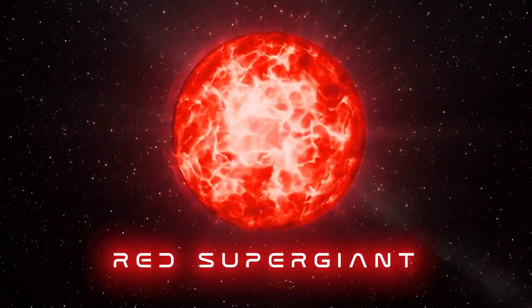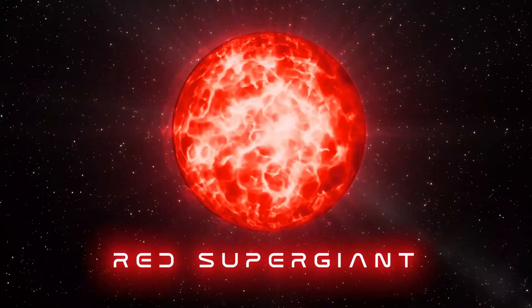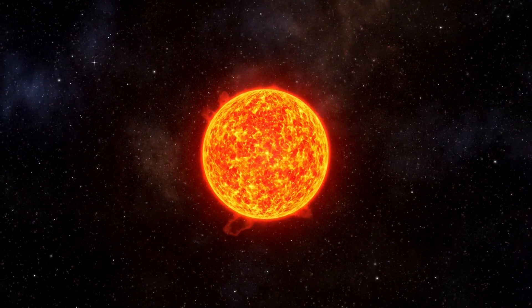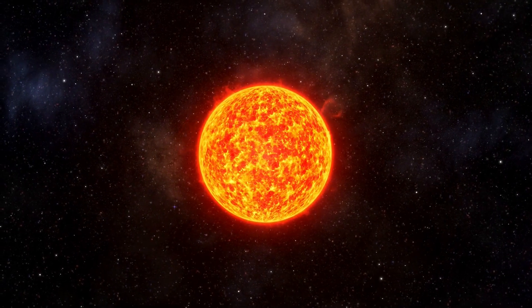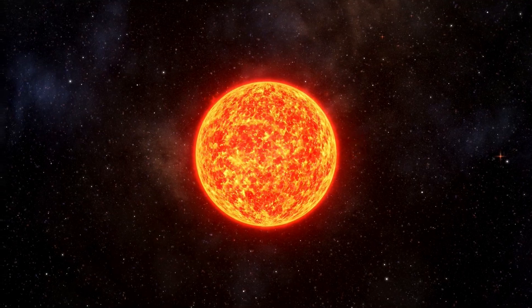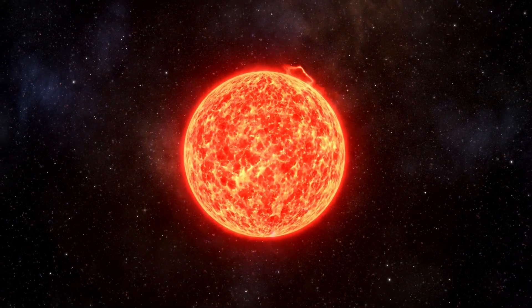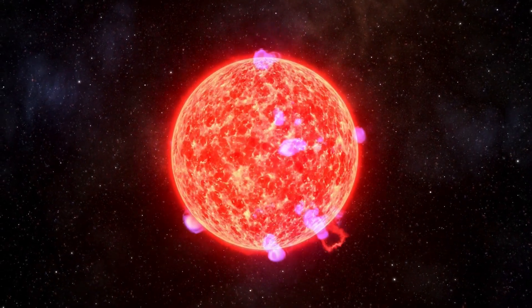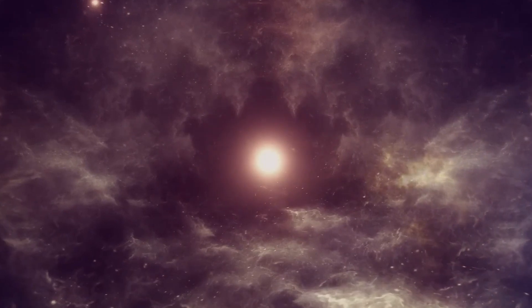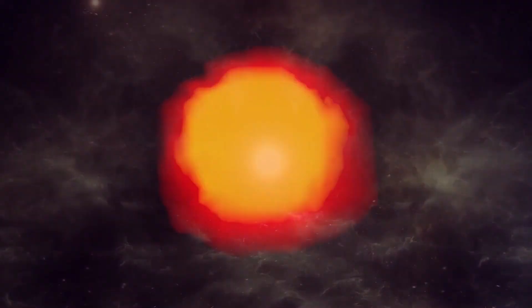When an ordinary star gets near to the end of its life, it gets bigger and bigger and turns into a red supergiant. It's at the end of its life, but that's compared to the age of the universe, because it still has tens of millions of years left to live.